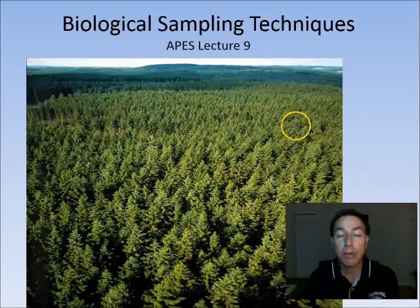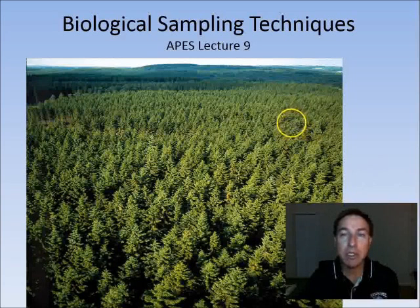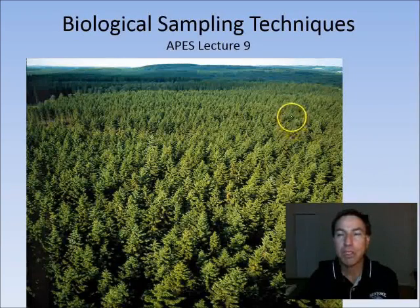It would be a huge task to sample even a small part of this forest to get all those things. So researchers use different types of biological sampling techniques in order to make the job a little bit easier so they can get a close estimate. So let's look at some of these techniques.